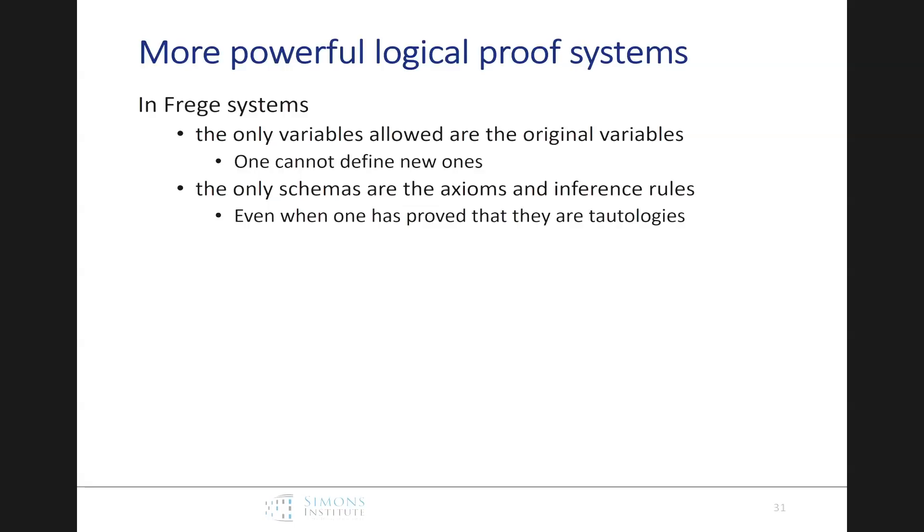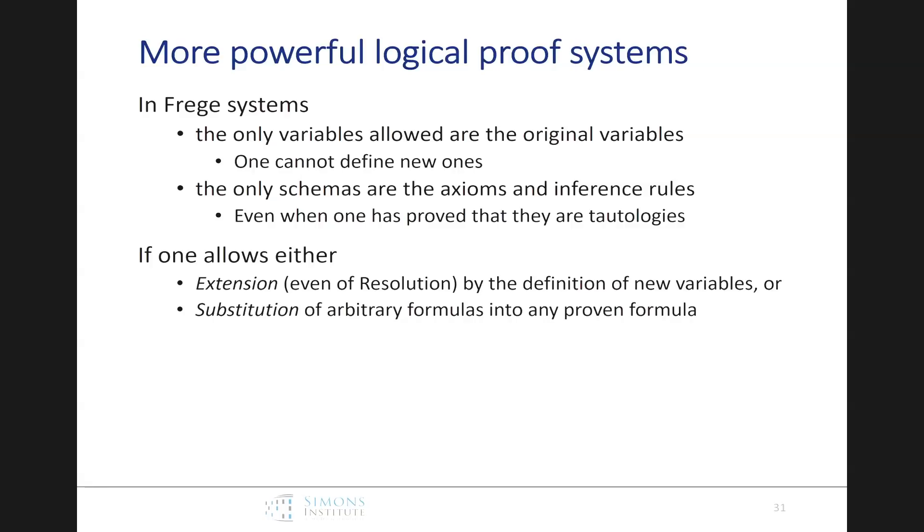So these are systems that are more specialized in Frege. What happens if we go in the other direction to get more general than Frege? So in Frege systems, the only variables that you're allowed to use are the original variables. You can't define new ones. And the only schemas you get to use are the axioms and the inference rules. But suppose you've proved an axiom, why not allow yourself to substitute in that axiom, right? Suppose you've proved a tautology, why not allow yourself to substitute into that, too? Well, if you allow either of these two things, substitution of arbitrary formulas, or extension, where you allow extra variables, even if you've started to do it just with resolution, then it turns out you get a system called extended Frege, and Cook and Reckhow actually proved that all extended Frege things are equivalent, proofs in which lines are basically Boolean circuits, and not just formulas. And in fact, this extension of resolution is kind of a natural direction that people have tried to do with practical SAT solvers. They're limited, it's fairly limited in how well it works so far because the, trying to figure out how to define new variables is really hard for the search.